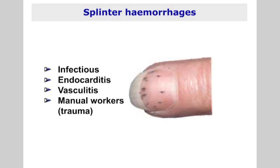Splinter hemorrhages, especially when proximal, may signify infectious endocarditis or vasculitis. Splinter hemorrhages may also be seen in manual workers, usually at the distal end of the nail, and may not be significant.